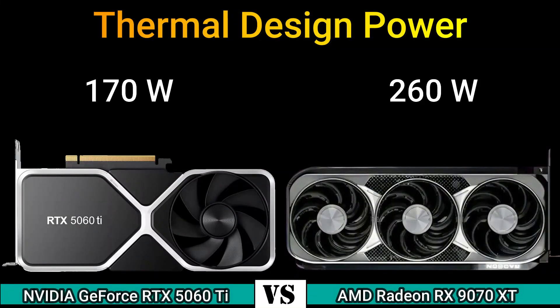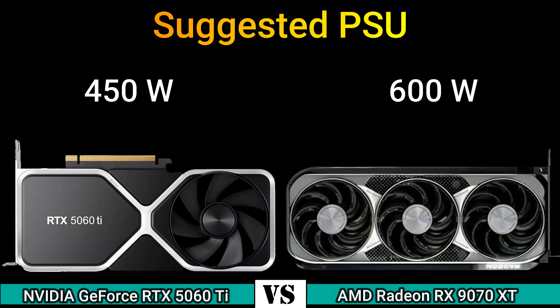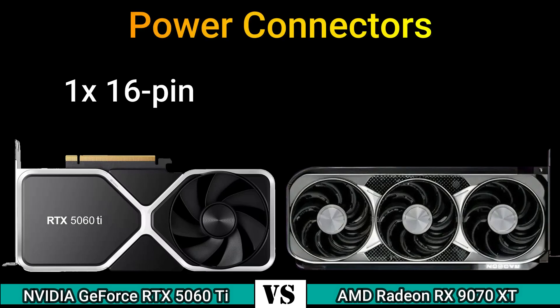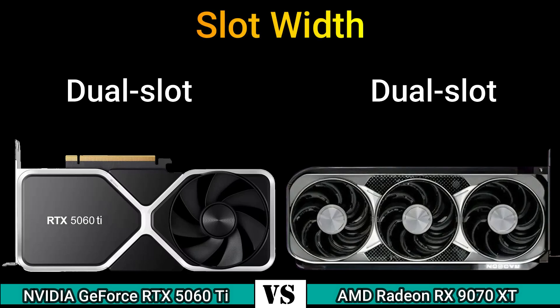Thermal design power: 170 W and 260 W. Suggested PSU: 450 W and 600 W. Outputs: 1x HDMI 2.1b, 3x DisplayPort 2.1b, and 1x HDMI 2.1a, 3x DisplayPort 2.1. Power connectors: 1x 16-pin and 2x 8-pin. Slot width: dual slot.